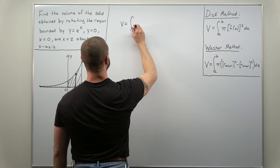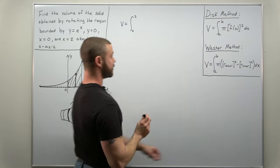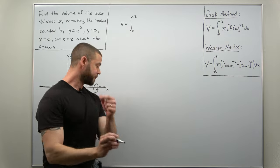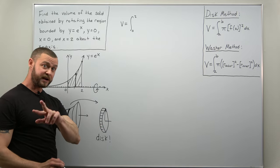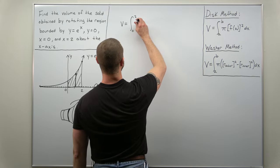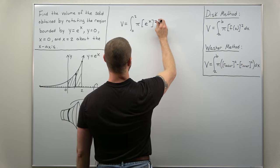We have it as an integral from 0 to 2, and what we integrate is pi times the radius squared. That's the formula for the cross sectional area of a circle. So we integrate basically pi r squared where we're using the radius as e to the x.